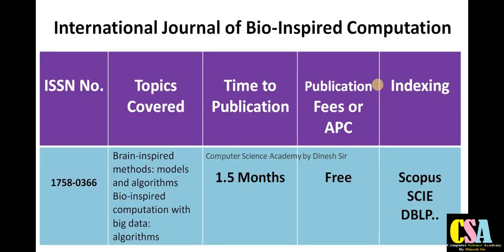The first journal in this series is the International Journal of Bio-Inspired Computation. The ISSN number is 1750-3566. Topics covered include brain-computer interaction (BCI), bio-inspired computation, big data, and algorithms. Publication time is one and a half months, there is no publication charge, and the journal is indexed in Scopus, SCI, and DBLP. Submit your research paper for this rapid publication journal.